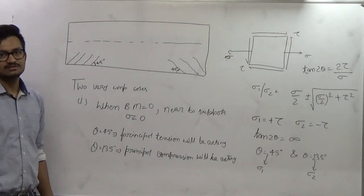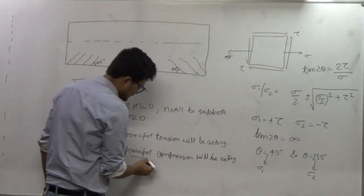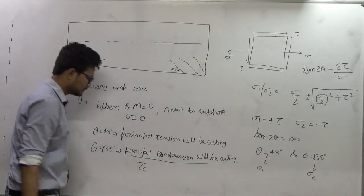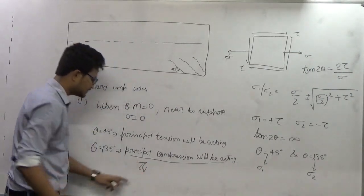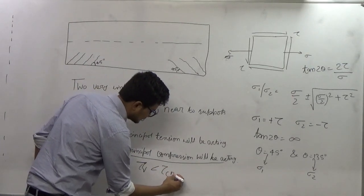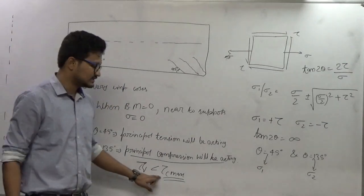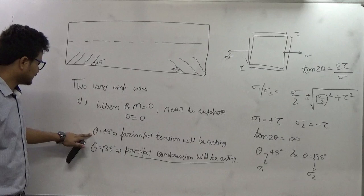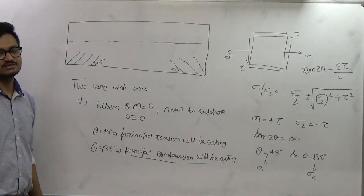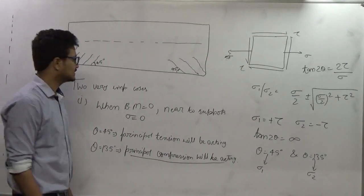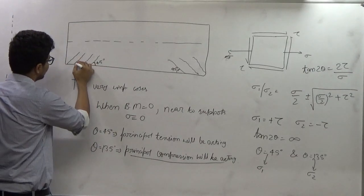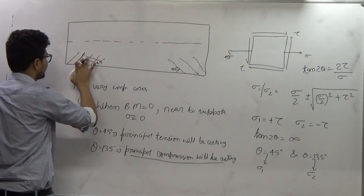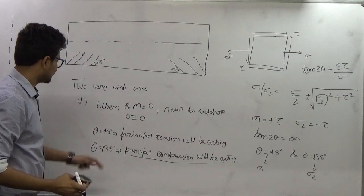Since concrete is very good in resisting compression, for principal compression we do not need to design a special structural member — we only need to ensure that the design shear stress tau_c is less than tau_c max, because at very high shear stress crushing of concrete takes place. For theta = 45°, principal tension is acting and concrete is not good in resisting tension, so we have to provide structural steel across the developed cracks, either in the form of bent-up bars or stirrups.